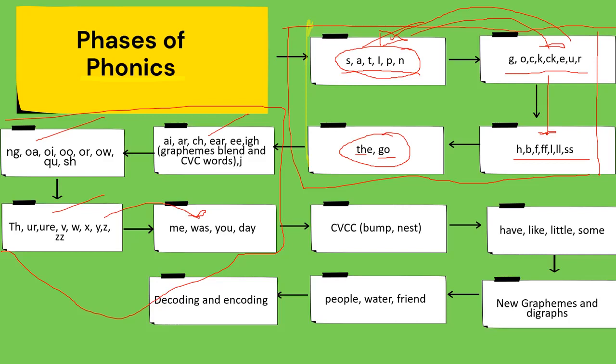Then, phase 3, etong dalawa naman na ito, reading CVC words like bump and ness. Then, insert level 3 of sight words like have, like, little, some. Eto yung magiging phase 3.